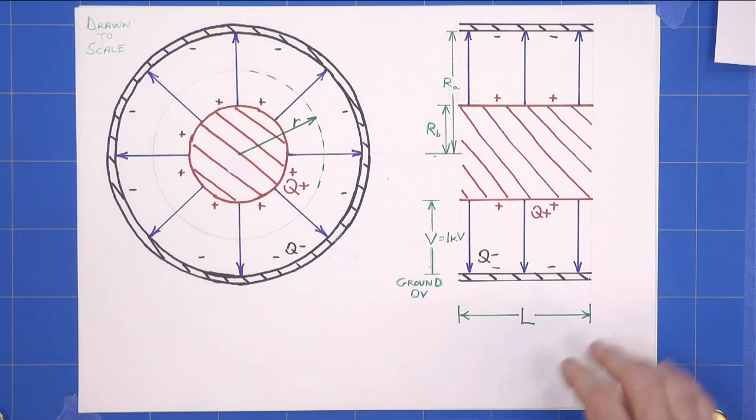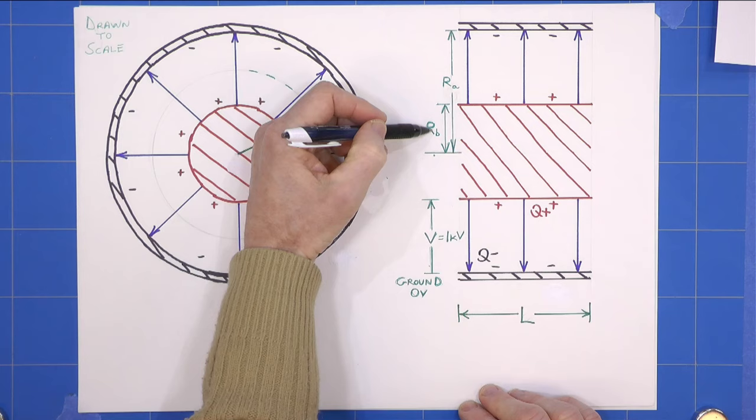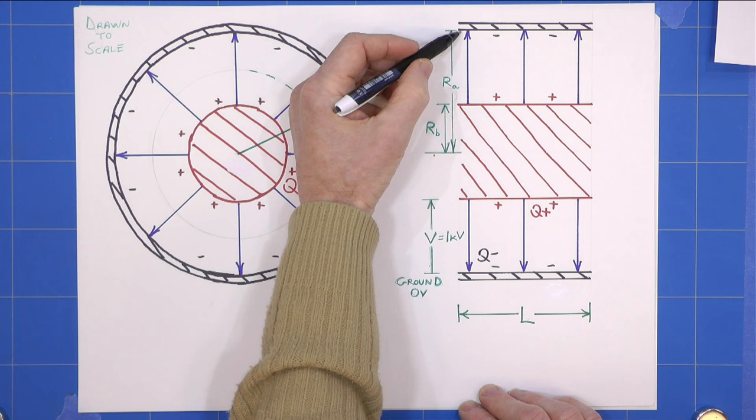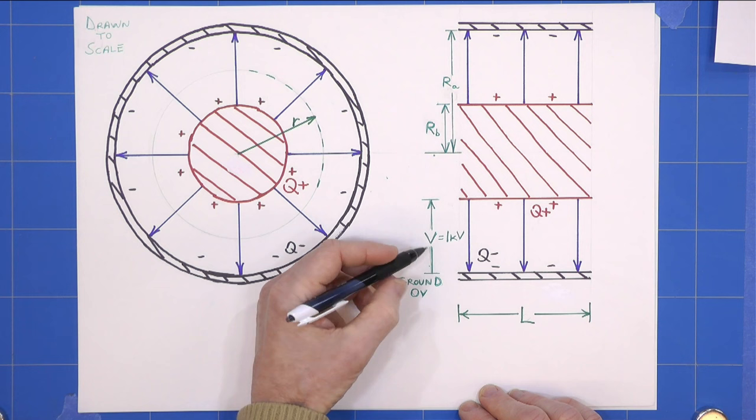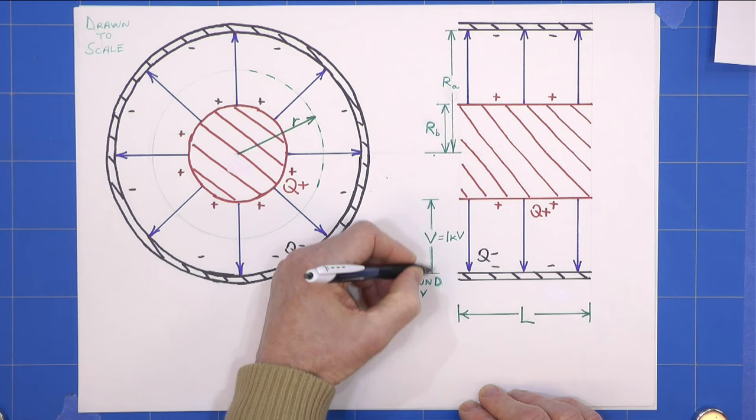We're told that the inner conductor has a radius of RB and the radius to the inside of the outer braid is RA, and there is a potential from the braid at ground, call it zero volts, to the inner of one kilovolt.